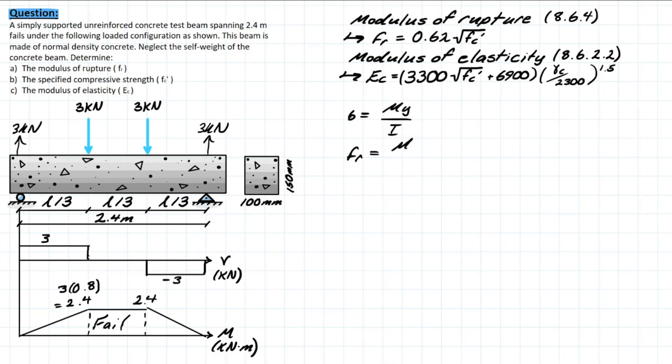We're simply plugging in our max moment at that location times our design variables for our specific cross section. We're given the cross section right here, so we can go ahead and start plugging in all these variables. We have 2.4 times 10 to the 6, and that's going to be in newtons per millimeter. Our y, based on this uniform rectangular cross section, is going to be right dead in the center of it, so it's half of this height, so that's going to be 150 divided by 2, which is in millimeters.